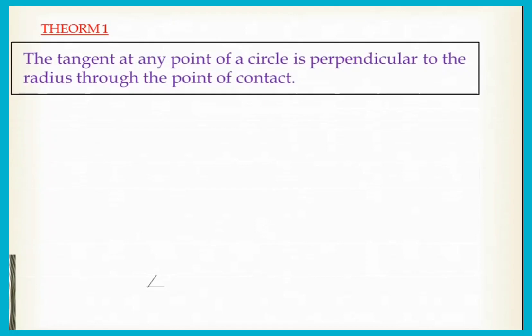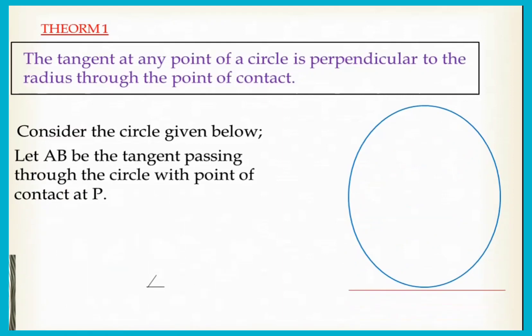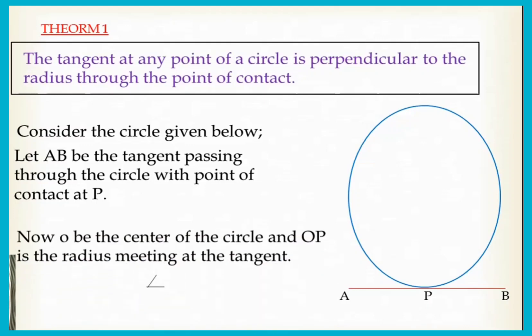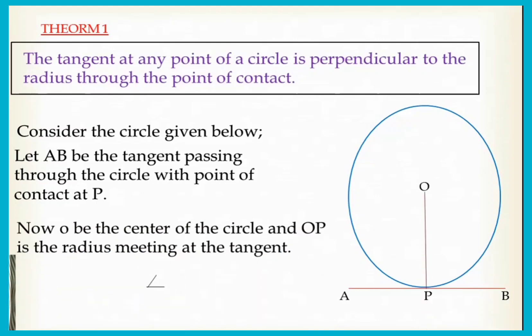Let us move to Theorem 1: The tangent at any point of a circle is perpendicular to the radius through the point of contact. As shown below, consider the circle. AB is the tangent passing through the circle with the point of contact P. Then O is the center of the circle and OP is the radius meeting at the tangent. Now angle OPB is 90 degrees, then we can conclude that OP is normal to AB.